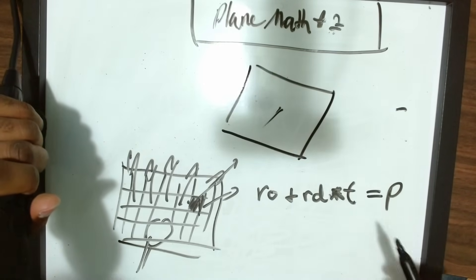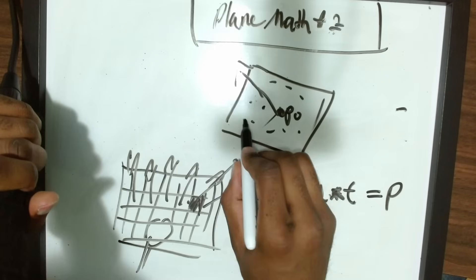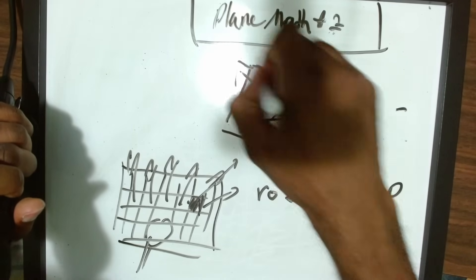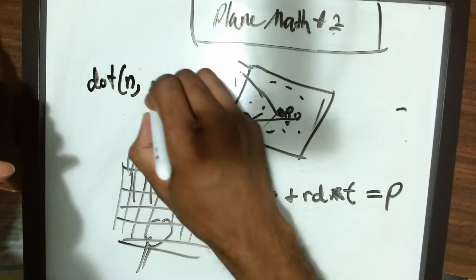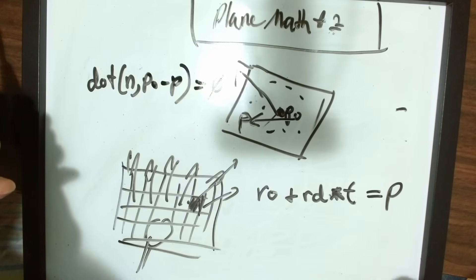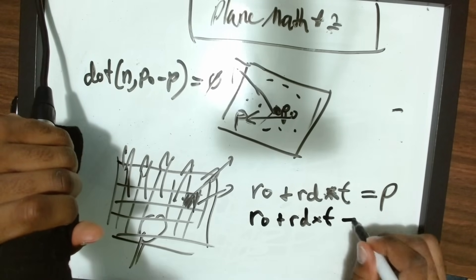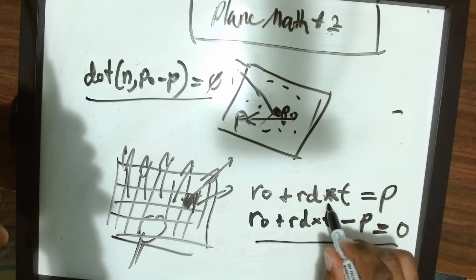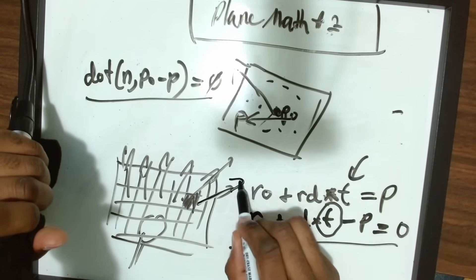If we have a plane in the world, we can describe it using a normal and a point p0. Any other point p on the plane draws a vector from p0 that is perpendicular to the normal. So the dot product of the plane's normal and the vector between p0 and p equals zero. We can combine this with the ray equation — ray origin plus ray direction times t minus p equals zero — and solve for t, which tells us where along the ray direction we're hitting the plane.